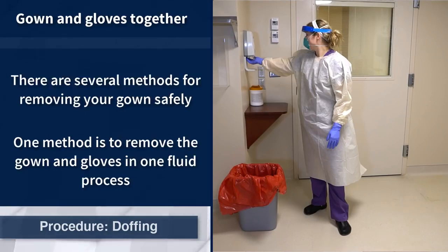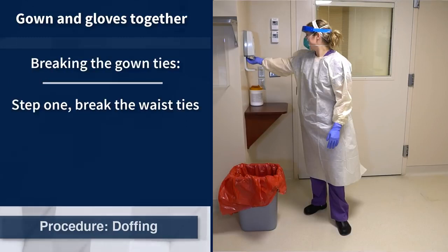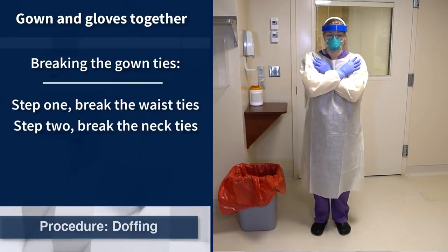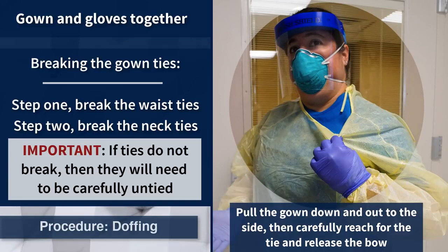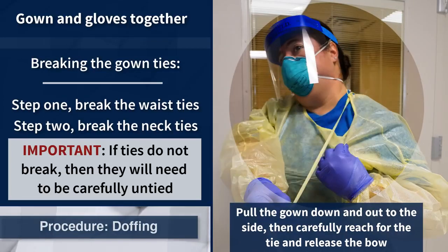There are several methods for the health care worker to remove their gown safely. One is to remove the gown and the gloves in the same process. Begin first by pulling at the gown's midsection to break the waist ties. Cross the arms to grasp at the front of the gown below the shoulders and pull the gown firmly away from the body to break the neck ties. If the gown does not tear away or the ties do not break, the health care worker will need to safely untie the neck and back ties, ensuring they do not touch their clothing, skin, or hair with the gown's sleeves. This can be achieved by reaching behind the head to undo the tie or by pulling the gown forward and to the side away from the face to bring the tie into reach.